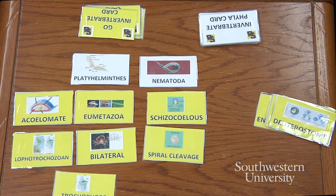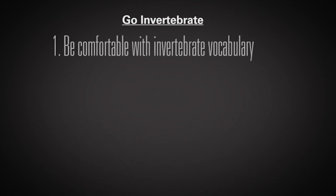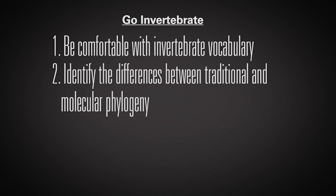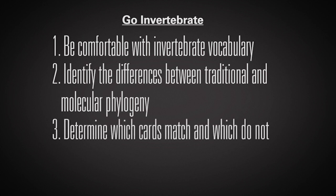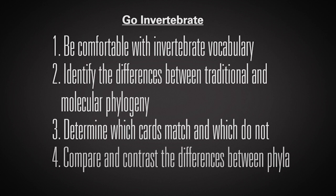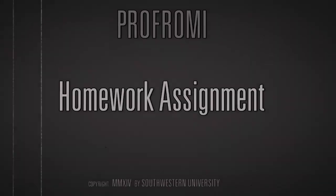By playing the game and getting familiar with the cards, you can learn all of the classification. In this video, we used the game Go Invertebrate to learn about classifying animal phyla. After viewing this video and playing the game, you should: 1. Be comfortable with invertebrate vocabulary. 2. Identify the differences between traditional and molecular phylogeny. 3. Determine which cards match and which do not. 4. Compare and contrast the differences between phyla. I've posted these cards on Moodle — download them so that you have your own set, or you can make them on index cards. For your homework, play the game with your classmates several times and make notes about what you learn about invertebrate classification. Let me know how it goes.